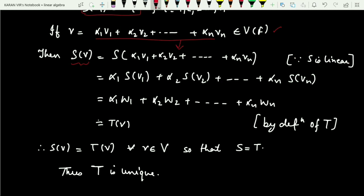Since we defined S(vi) = wi, substituting: S(v1) = w1, S(v2) = w2, ..., S(vn) = wn. So S(v) = α1*w1 + α2*w2 + ... + αn*wn. Now looking at the definition of T, this is exactly T(v). Therefore S(v) = T(v), and since this holds for every v in V, we conclude S = T, and hence T is unique.